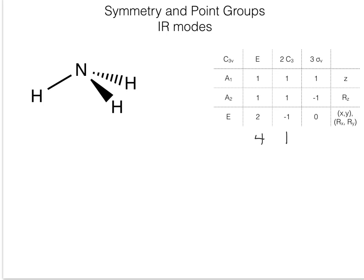For the reflection plane, we always try to include as many atoms as possible. That reflection plane includes the nitrogen and one of the hydrogens, and the other two hydrogens reflect back and forth to each other, so there are two atoms that are unshifted.